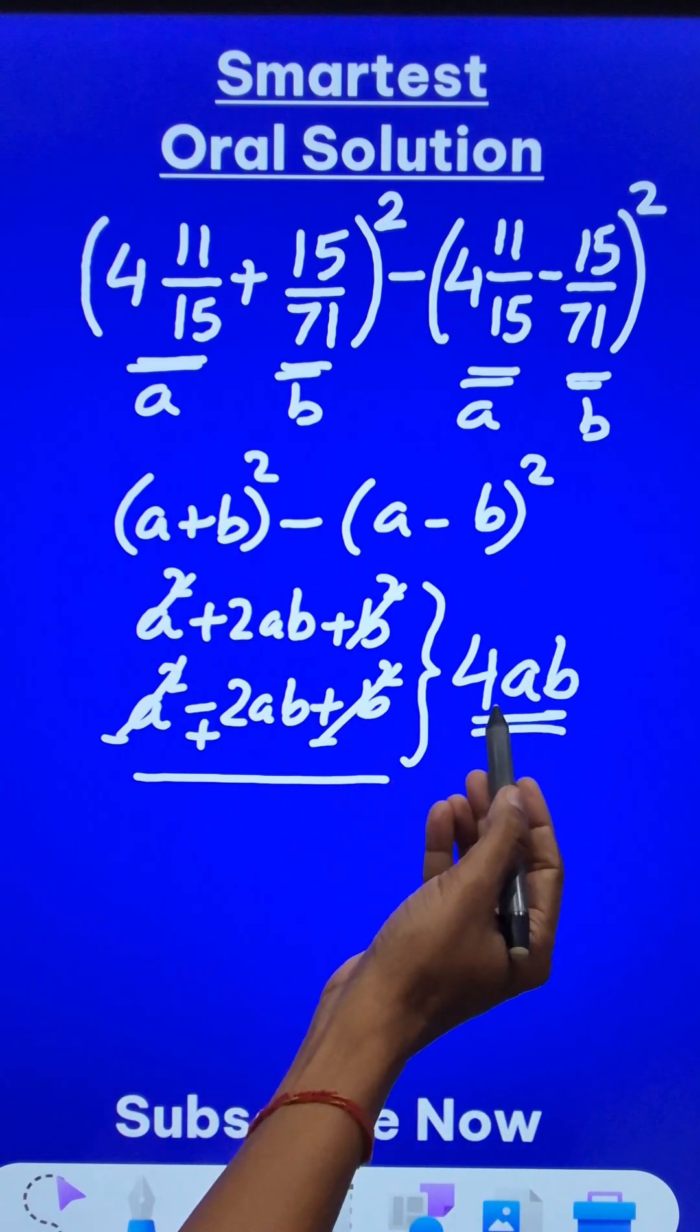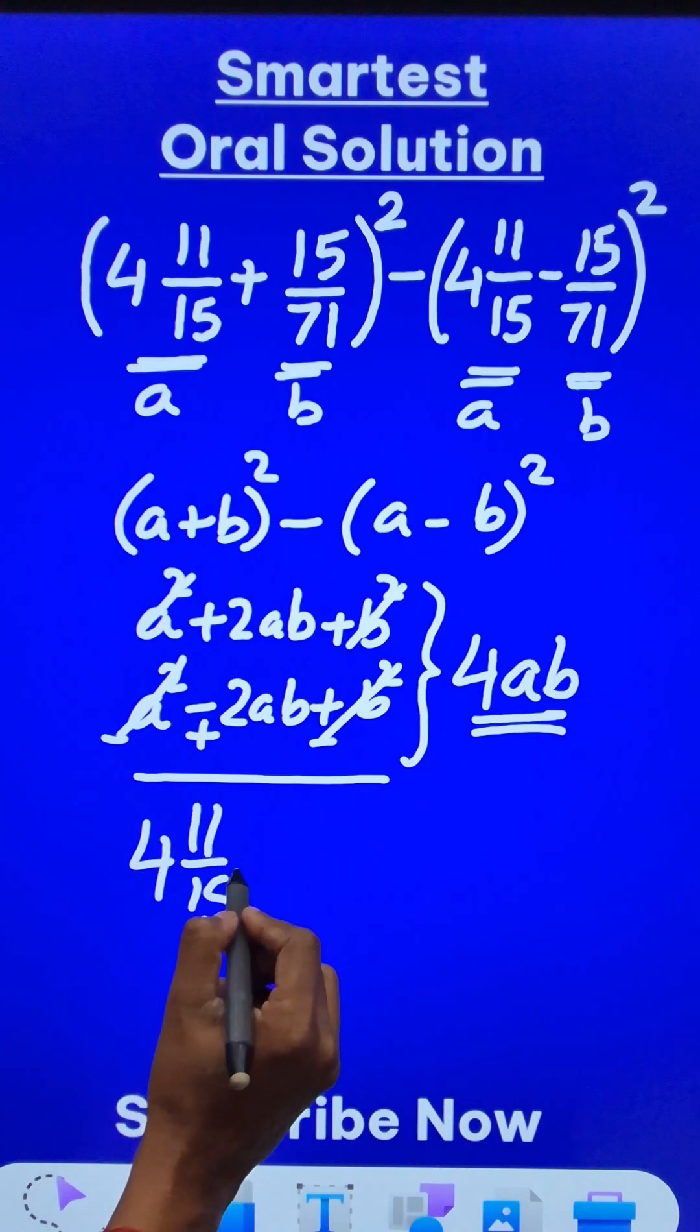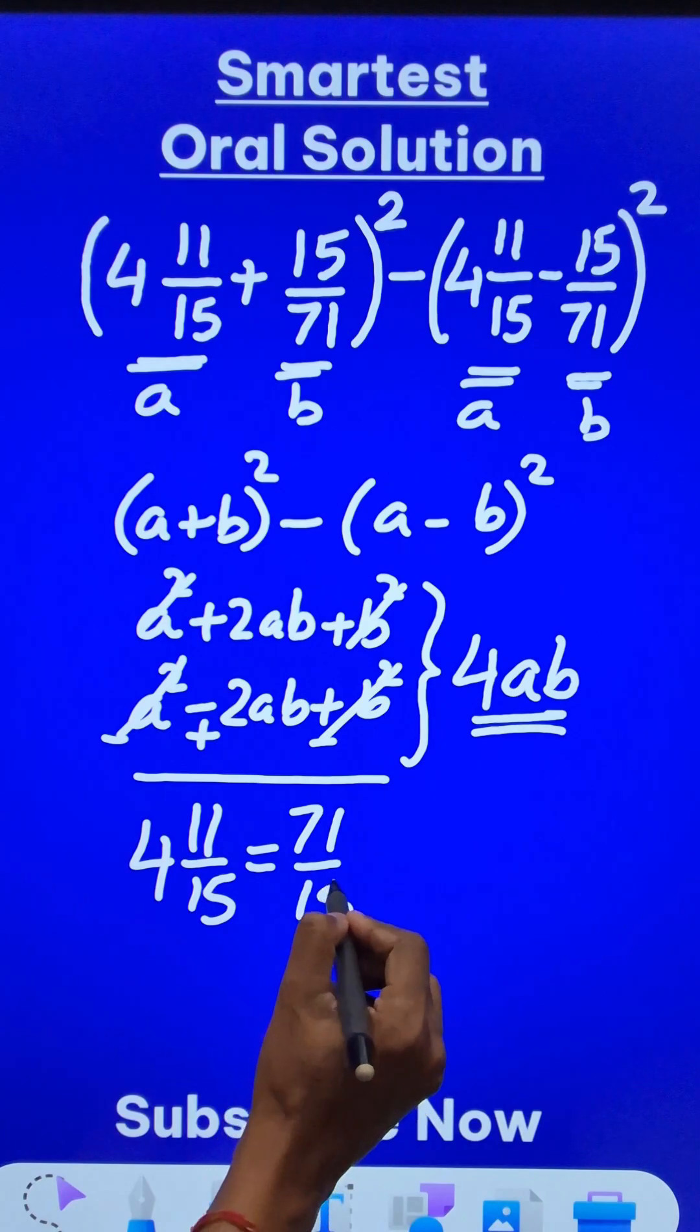Now, we just have to do 4ab. Now, a is 4 and 11 by 15. So what is the improper fraction of this? This is 60 plus 11, 71 by 15. Now, here we have 71 by 15 and b is 15 by 71, which is the reciprocal.